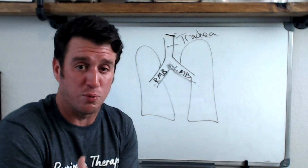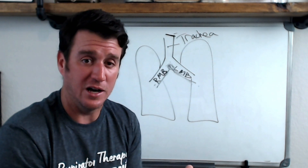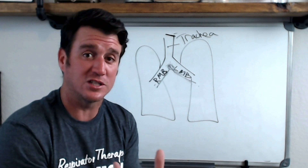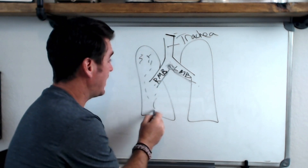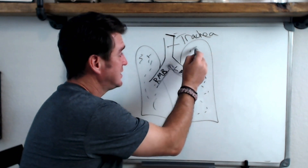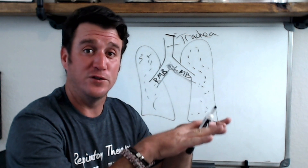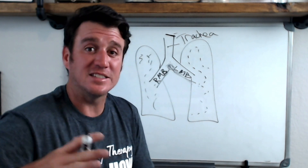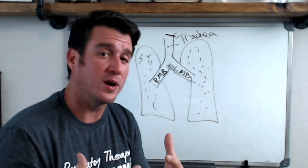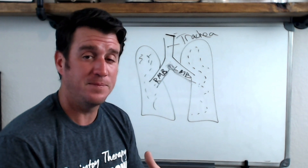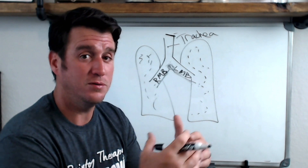Then you get into the respiratory bronchioles. After the respiratory bronchioles comes the functional unit of the lungs, or the pulmonary system, which is called the alveoli. These are all the little clusters throughout here where, when you breathe in, oxygen comes in, it diffuses into the blood, and CO2 diffuses out of the blood. We breathe to bring oxygen in and to get rid of CO2 — oxygen in, CO2 out.